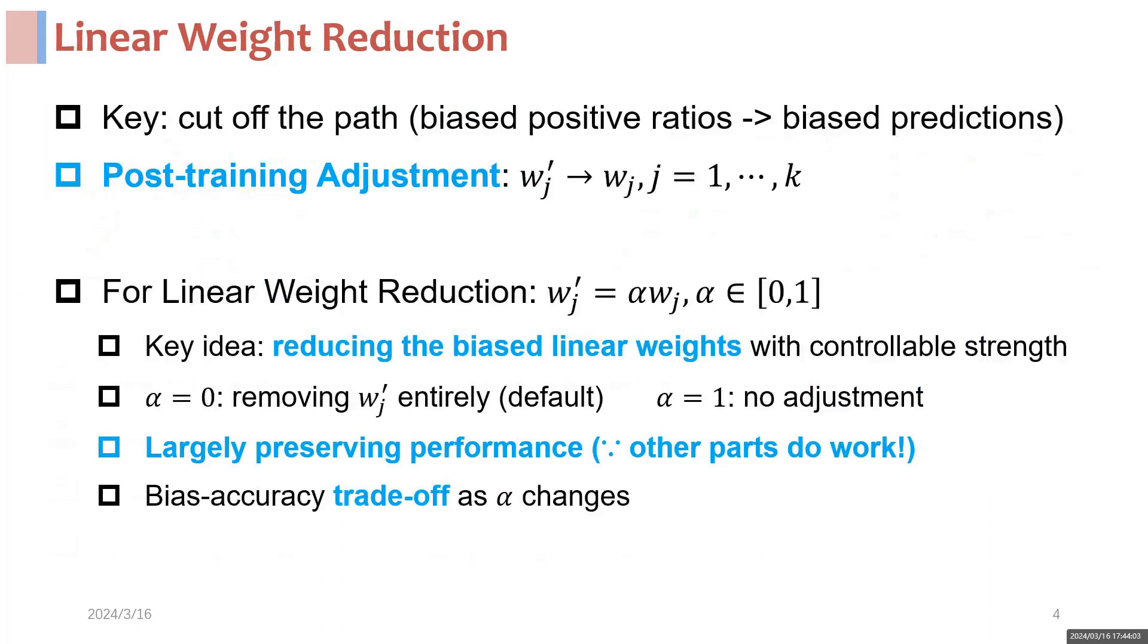According to the above analysis, the key to counteracting the feature-level bias lies in cutting off the path from the uneven distribution of positive sample ratio to the biased model predictions.